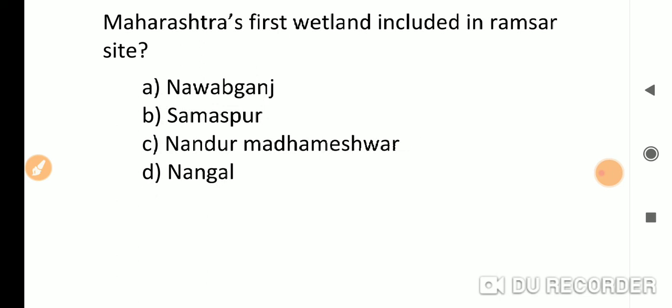Maharashtra's first wetland included in Ramsar site. Recently, India's ten new wetlands were included in the Ramsar list. Maharashtra's Nandur is the first wetland from Maharashtra. Apart from this, Nawabganj and Samaspur are from UP, and Nangal is from Punjab. Six from UP, three from Punjab, and Nandur from Maharashtra. The answer is Maharashtra's first Ramsar site.